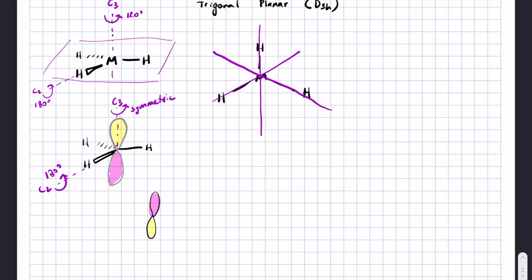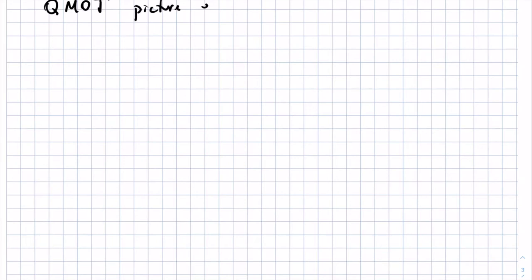Our approach is to start with very simple structures and then distort them a little bit and see what changes. Let's do the qualitative molecular orbital theory picture of CH3. We'll define a coordinate system: Y is coming out at you, X and Z are in the plane of the page, X going up, Z going to our right. We'll start with the trigonal planar structure, not yet saying whether it's radical, cation, or anion, with all CH bonds in the XZ plane.